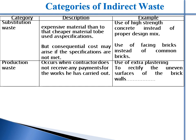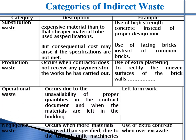An example is the use of higher-strength concrete instead of using proper design mixes. Production waste: Occurs when a contractor does not receive payment for work carried out, such as extra plastering for uneven surfaces.